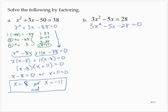Using the AC method again, I'd have 3 times negative 28 is negative 84. So I need a pair of numbers that multiplies to negative 84 and adds to negative 5.